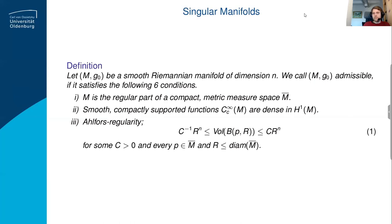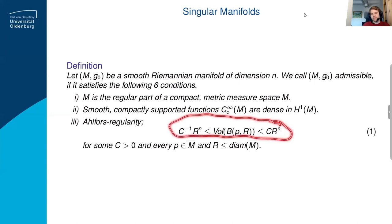Then we get a metric condition which restricts the allowable kind of singularities. We assume a kind of Alfors regularity. We don't assume that the volume of arbitrary balls in the metric space is Euclidean, but we assume it grows like Euclidean balls. This will also rule out some examples.